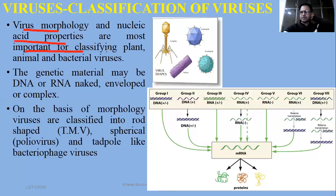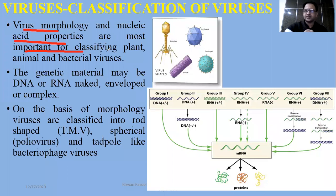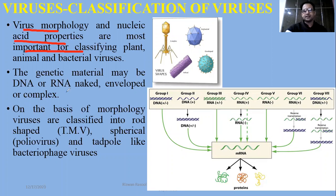We also make groups based on the host. Viruses that infect bacteria are called bacteriophages. Viruses that infect plants are called plant viruses, and so on. In terms of genetic material, we classify them as DNA viruses and RNA viruses.